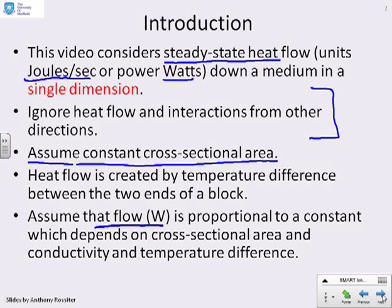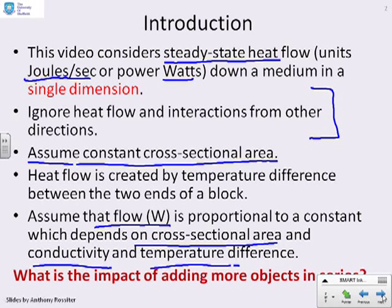Now, the flow or the heat flow rate in watts W is going to be proportional with a constant which depends on the cross-sectional area of the block and the conductivity. And it will also clearly depend on the temperature difference. So a simple linear relationship is going to hold. And we'll explain this in the next slide. What we want to know is what's the impact of adding more conductors in series.